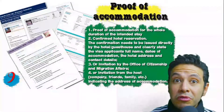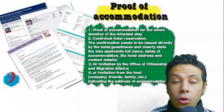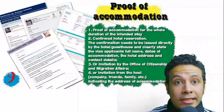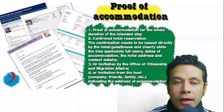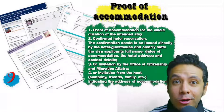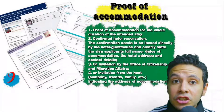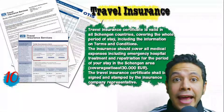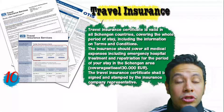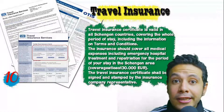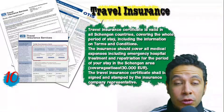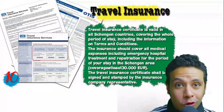You will also need proof of accommodation — a confirmed hotel reservation, an invitation from a host, or an invitation from an organization you are visiting. For a hotel or hostel, an initial booking is acceptable, though in some cases a confirmed booking may be needed. The hotel name, address, and contact number must be mentioned. If invited by a person, the invitation letter should be mailed directly to the embassy or submitted with a copy of the inviting person's passport. Many countries, especially Schengen area countries, require travel insurance with coverage of at least 30,000 euros.